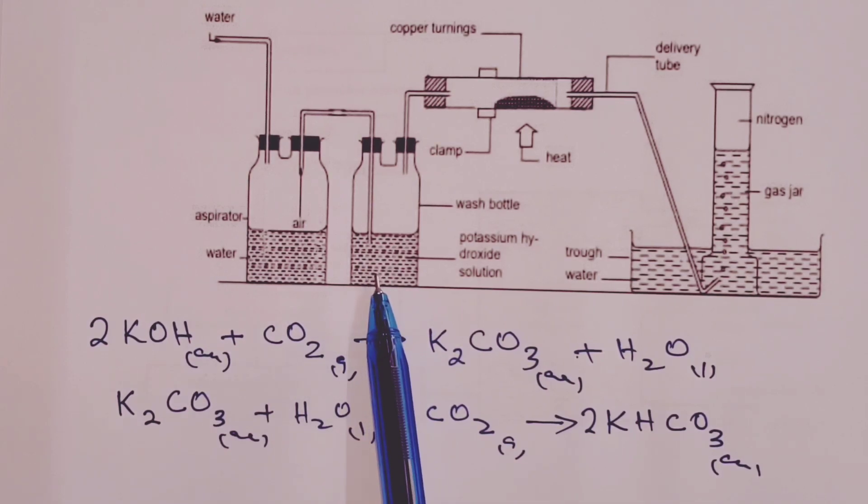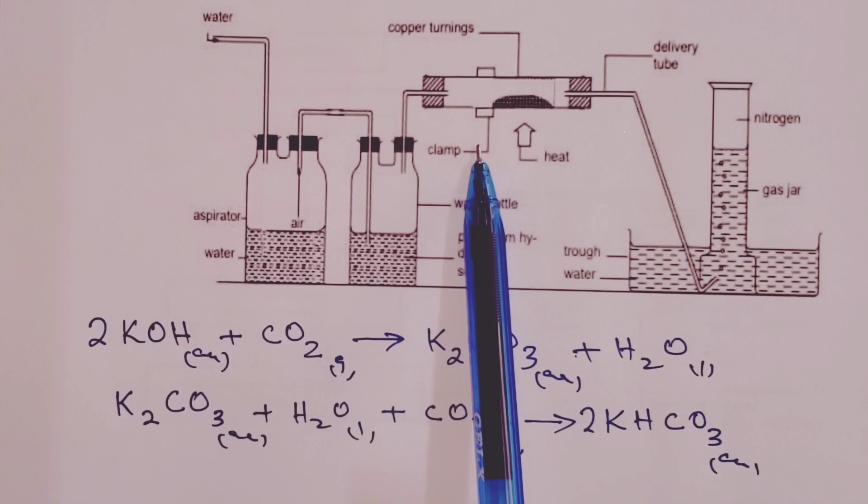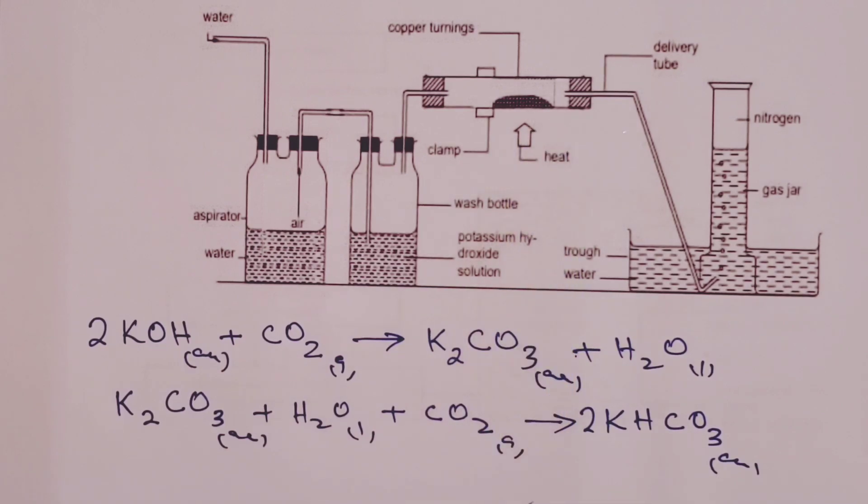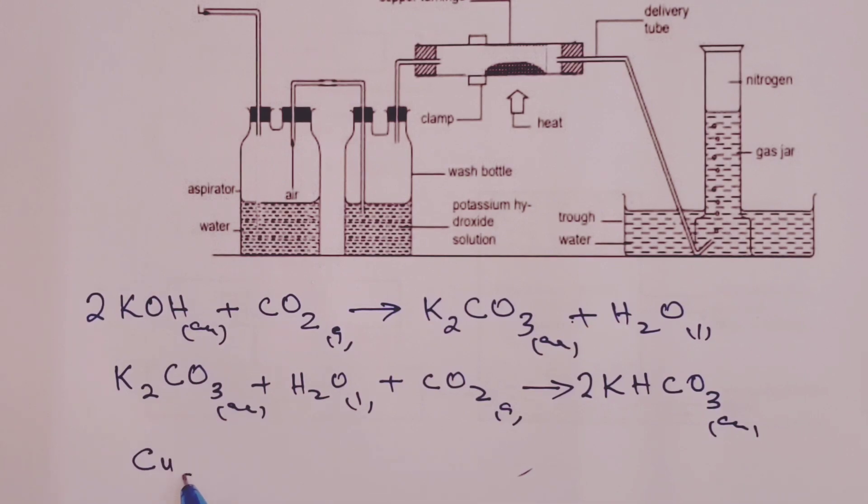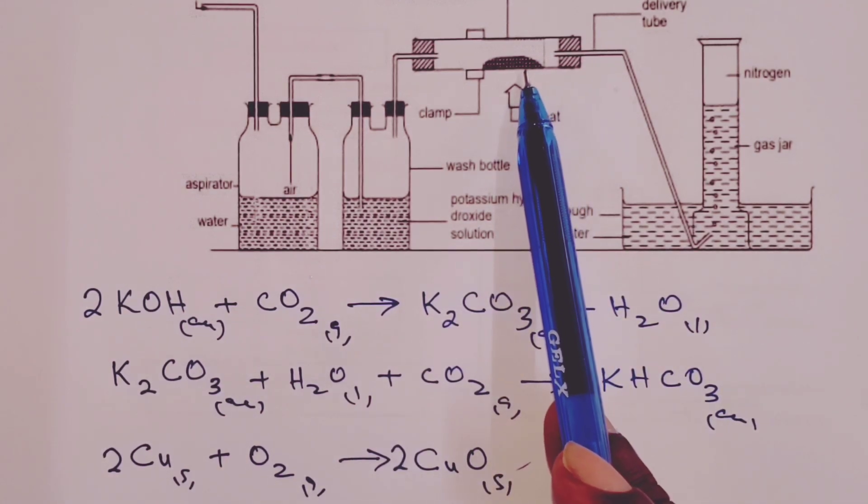Next step is to remove oxygen. In our combustion tube here, we shall pack some copper turnings. The copper turnings would react with oxygen in air to form our copper (II) oxide. Of course, the observations would be brown solid changing to black solid after that reaction has taken place in the combustion tube.